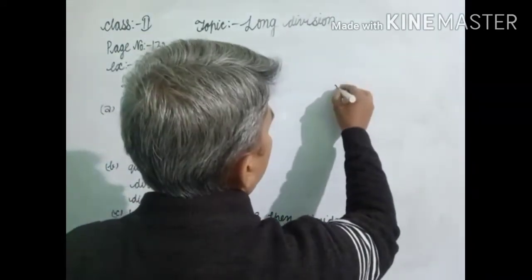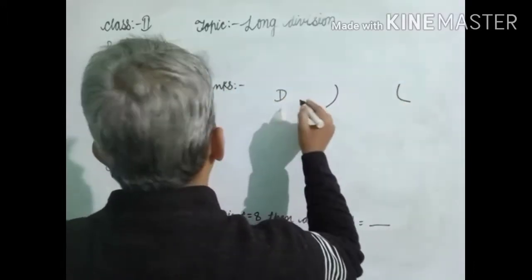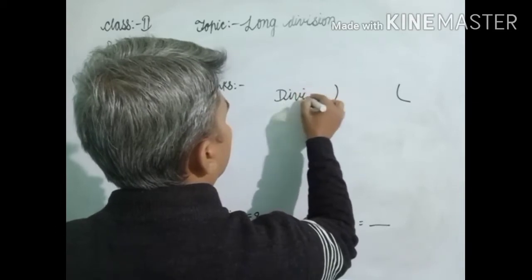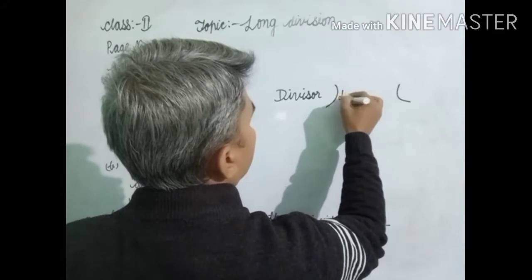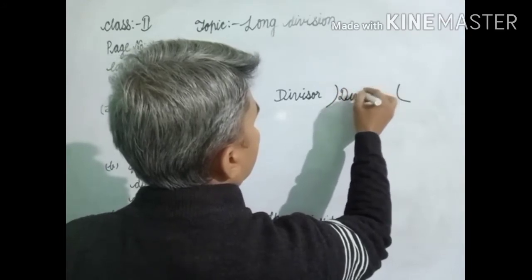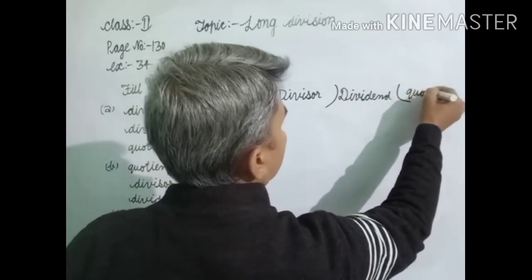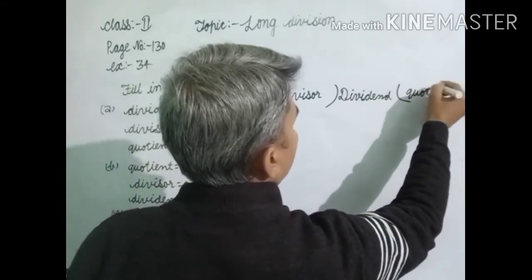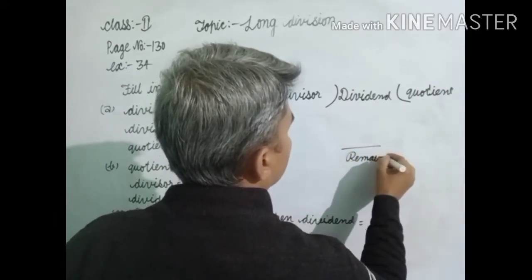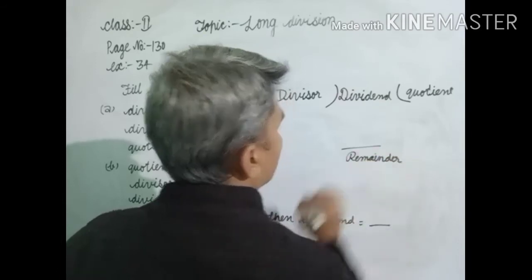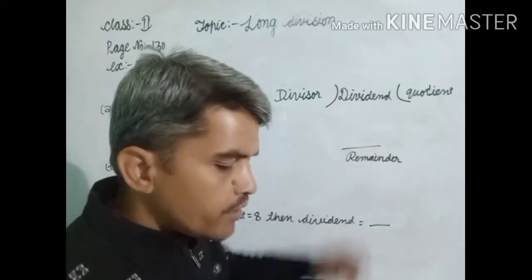This is the shape of a division. Here is the divisor, here is the dividend, here is the quotient, and here is the remainder. So we must remember: divisor, dividend, quotient, and remainder.